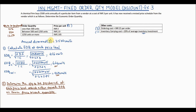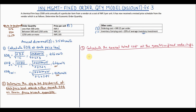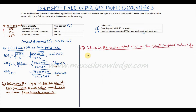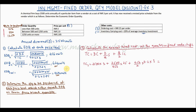We now move to step three: calculate the annual total cost at the quantities fixed under step two. The total annual cost equals the total annual purchase cost plus the annual ordering cost plus the annual holding cost. Let's note down the formula and calculate each one.